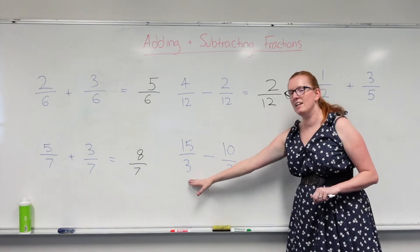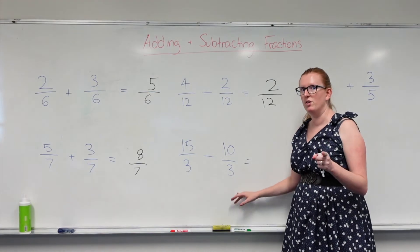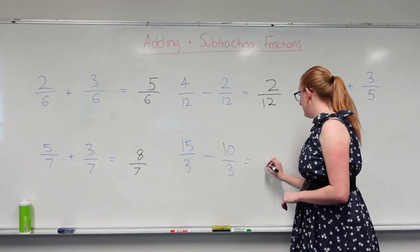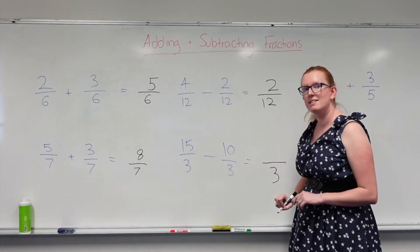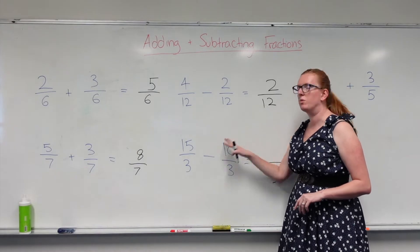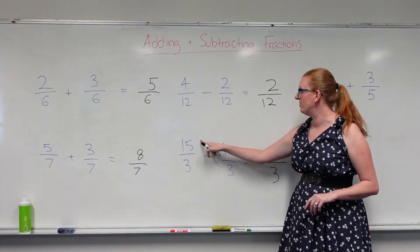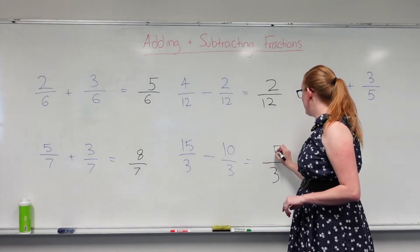And down here again I've got matching denominators. My denominator stays the same. All I do is work with the top numbers. So 15 take away 10 gives me 5.